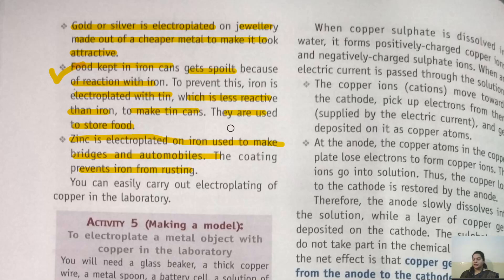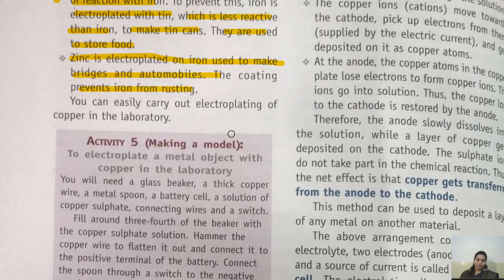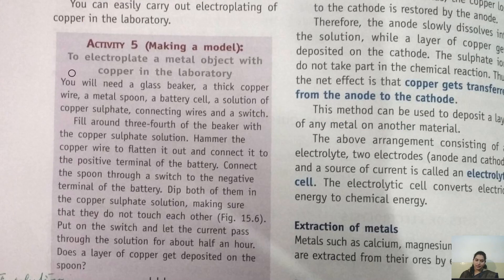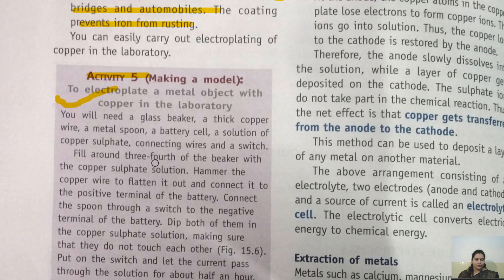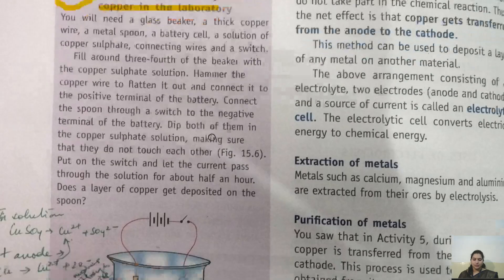The very important part of this chapter is Activity 5. When school reopens, we will perform this activity, but first we will try to understand what is in it. This activity demonstrates how electroplating is done. The activity is to electroplate a metal object with copper in the laboratory.